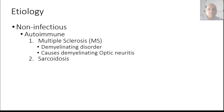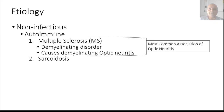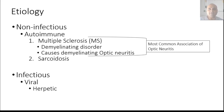Optic neuritis is largely caused by non-infectious etiology, of which multiple sclerosis is the number one association. Multiple sclerosis is a demyelinating disorder and it causes a demyelinating optic neuritis — that will be our focus today. Other autoimmune causes include sarcoidosis, and there are infectious causes like herpes virus, but they are in the minority. By far, the most common cause is a demyelinating disorder with multiple sclerosis at the top of the list.